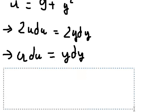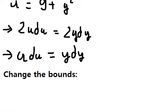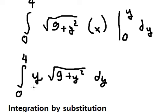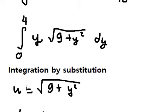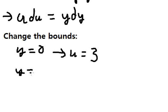Next we need to change the bounds. When Y equals zero, we put zero here to find the value of u. So the square root of 9 plus 0, that's 9 plus 0, we have 3. So when Y equals 0, u equals 3.